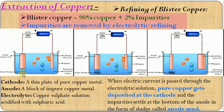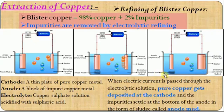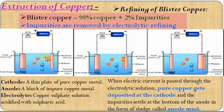As the process continues, copper keeps depositing at the cathode and the size of the anode keeps reducing. The impurities are not attracted by the sulfate ions and settle at the bottom of the anode as anode mud. This anode mud contains valuable metals like gold and silver, which are processed separately. This is how impure copper is refined into pure copper at the cathode.